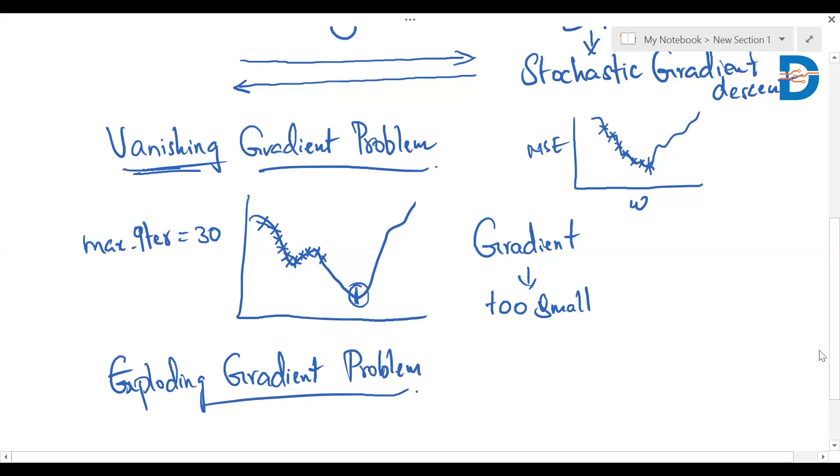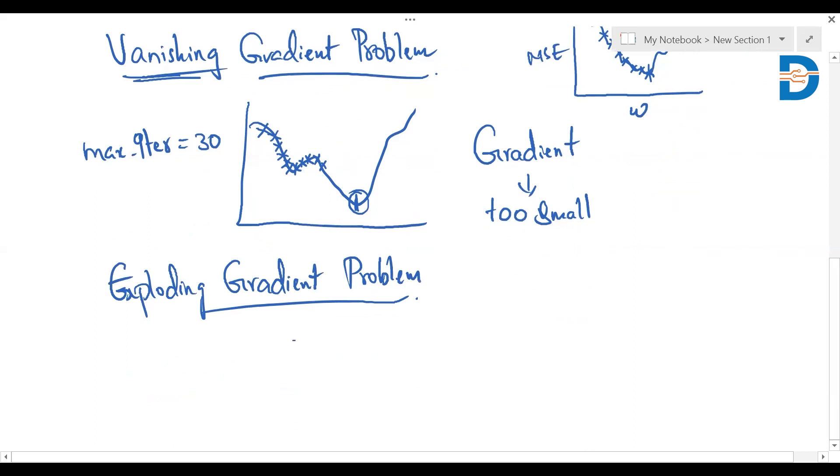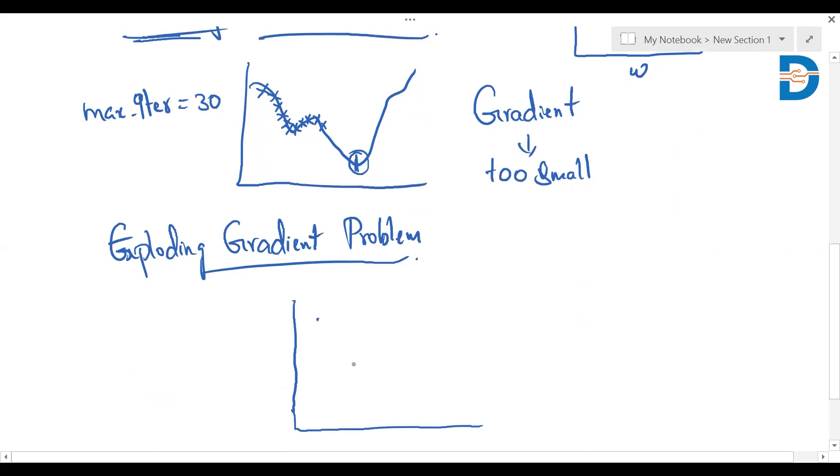In this exploding gradient problem, we'll be having a similar type of graph, let's say I'm taking this same graph. This is my global minimum here. To reach this, I have to move through the weights to reach here. So to obtain this,